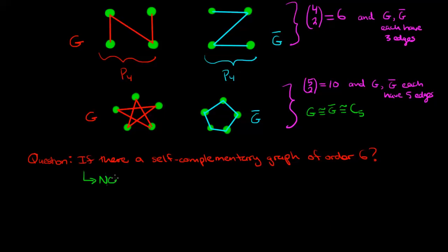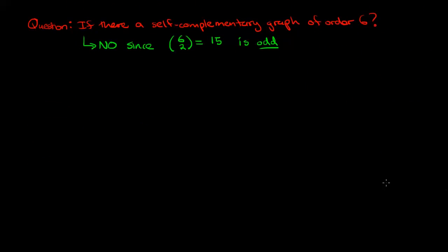The answer is no, since 6 choose 2 is equal to 15, which is odd. In other words, the complete graph of order 6 has 15 edges, and in order for a graph to be self-complementary it would have to have the same number of edges as its complement, but obviously those 15 edges cannot be equally divided into two pieces. So really what we've done is we've stumbled upon this fact.